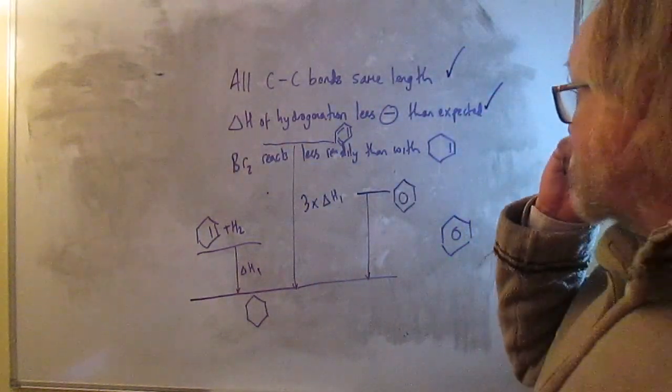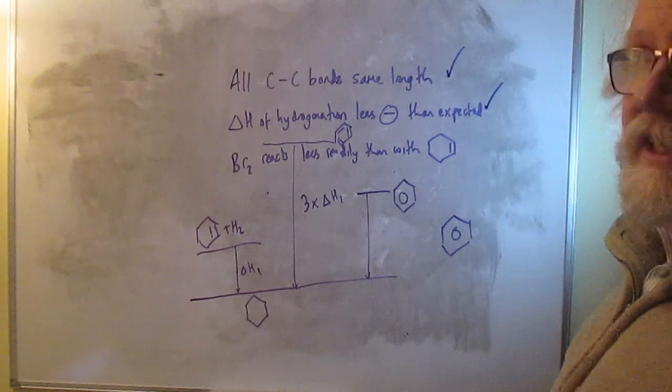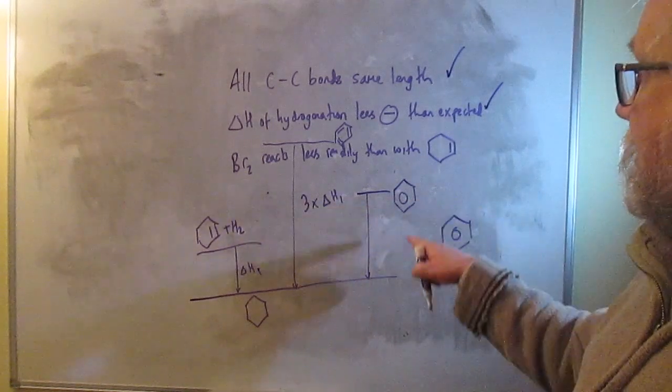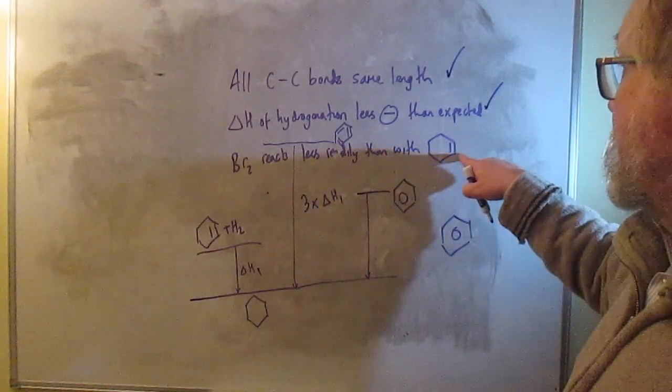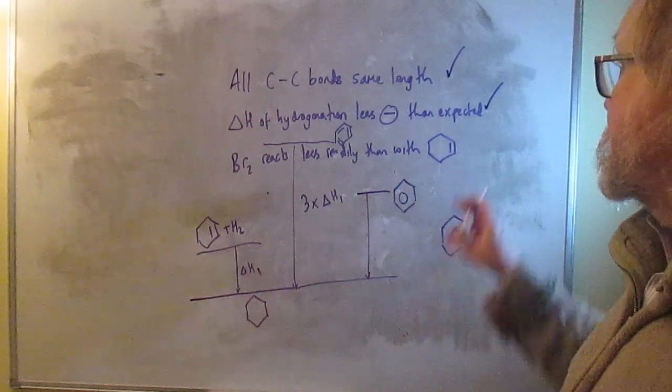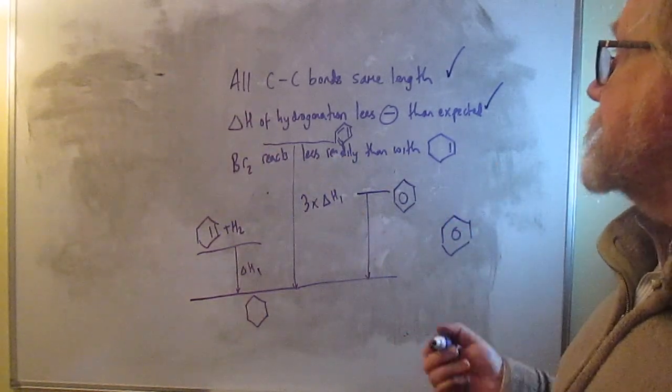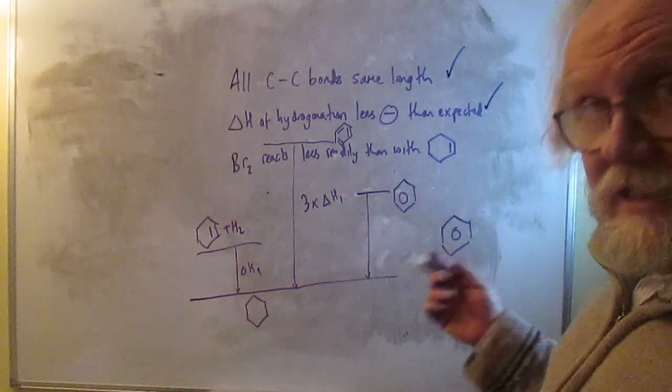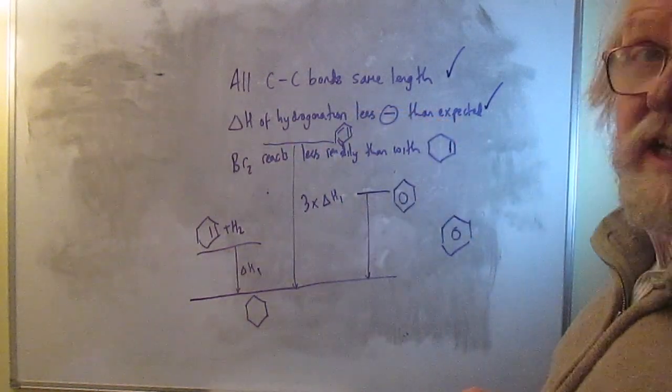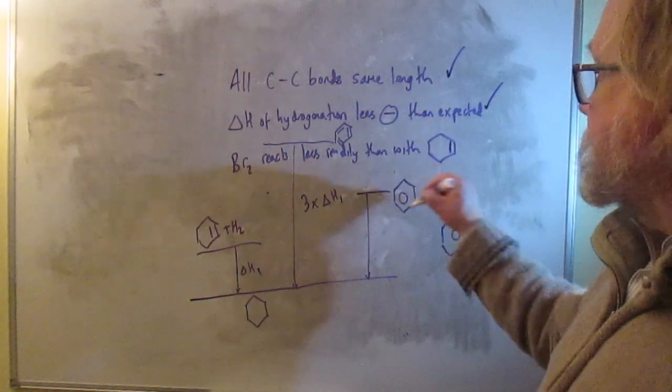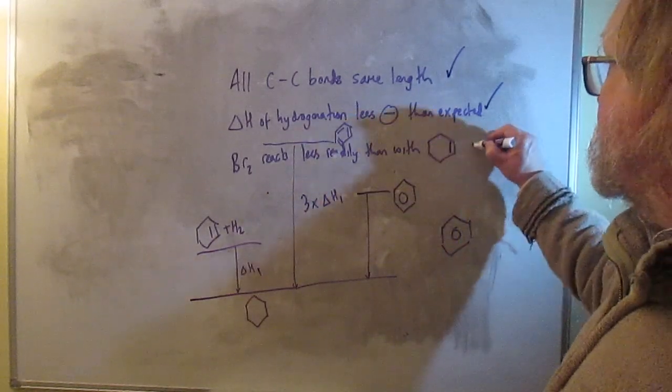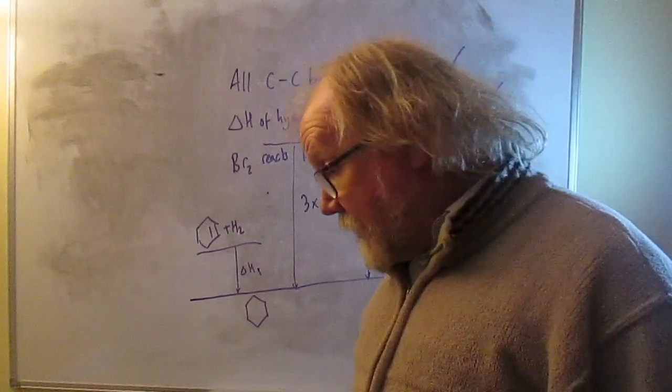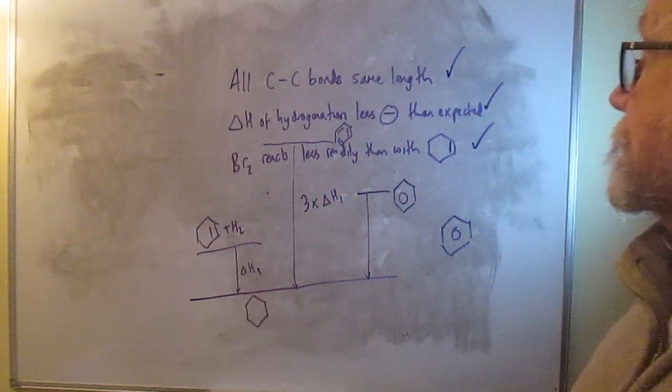And bromine reacts less readily with benzene than with cyclohexene. That, of course, is true, because remember, you need a halogen carrier catalyst, like aluminium bromide, to get it to react with benzene. But it just reacts with bromine water without any catalyst with that. So that's definitely the case. And the way we interpreted that was by saying that the delocalisation reduces the density of pi electrons compared to what you would have in a localised bond. So again, it supports the delocalised model. So all three of those things are indeed important lines of evidence. And therefore, the correct answer is A, that they're all important.